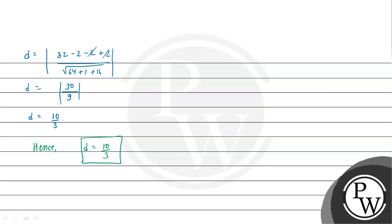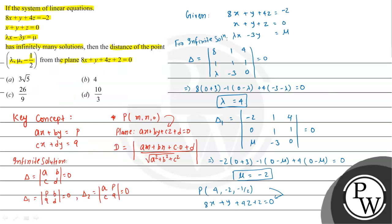The distance between the given point and the plane is 10/3 units. This is the final answer. Looking at the options, option D is our correct choice. I hope you understood the solution. Best of luck, thank you.